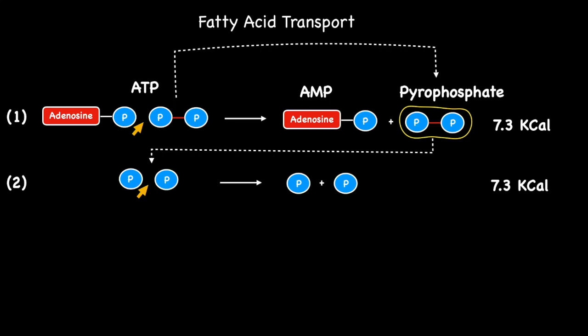With each releasing 7.3 kilocalories worth of energy, giving a total of 14.6 kilocalories. It is this combined energy derived from the hydrolysis of these two phosphate bonds that drives the activation process to completion. What is crucial about this process is the number of high energy phosphate bonds that are hydrolyzed. These bonds, which are colored in red, release the same amount of energy during hydrolysis.